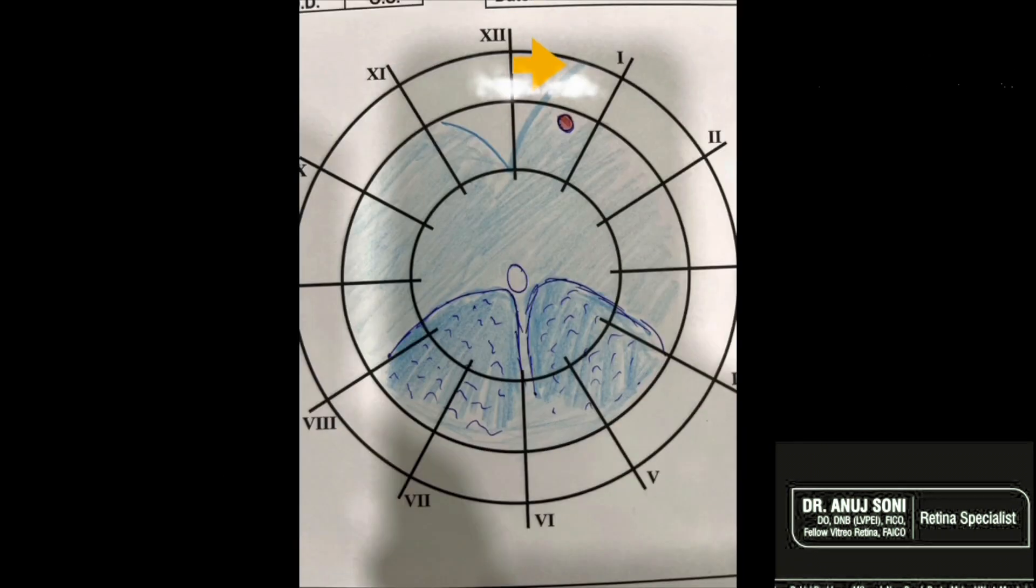So in this case, you can see the RD is higher on the nasal side and that is why the hole is also present on the nasal side of the 12 o'clock.